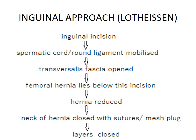The inguinal approach — Lotheissen: an inguinal incision is made, the spermatic cord or round ligament is mobilized, and the transversalis fascia is opened. The femoral hernia lies below this incision. The hernia is reduced and the neck of the hernia is closed with suture or mesh plugs, then the layers are closed.